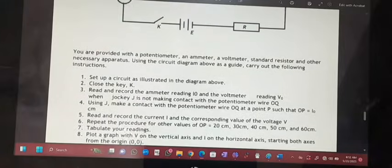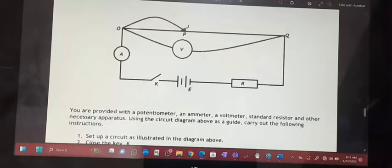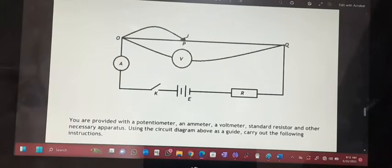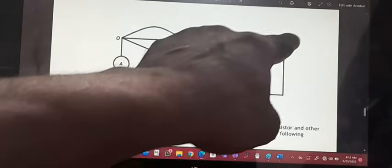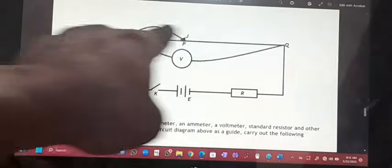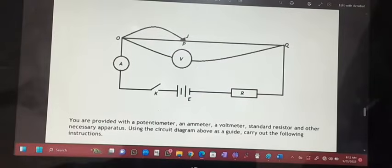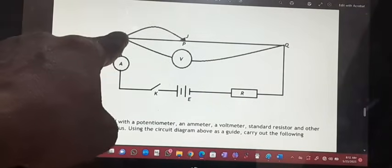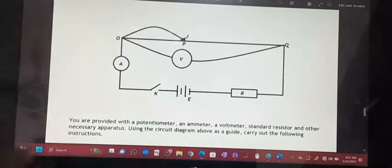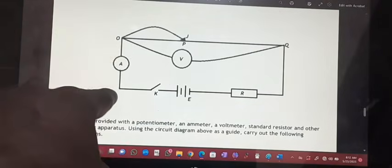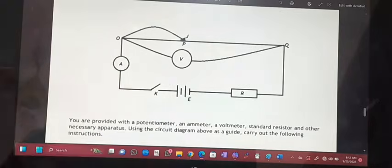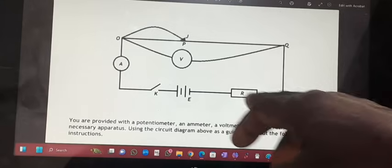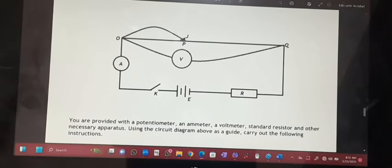So what we are going to do is draw the setup. Let me just explain how the setup looks like. We have the voltmeter connected across the terminal of the potentiometer wire. Then we have the jockey, and we have the ammeter, and we also have the key connected to the battery, and battery connected to the resistor. It's a very simple connection.